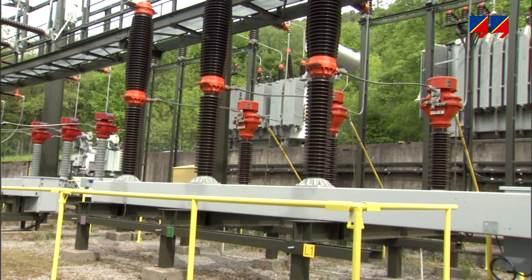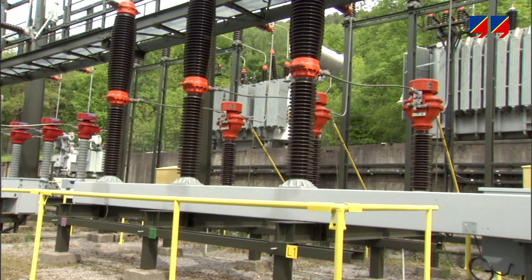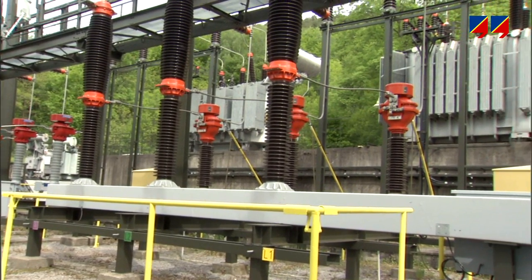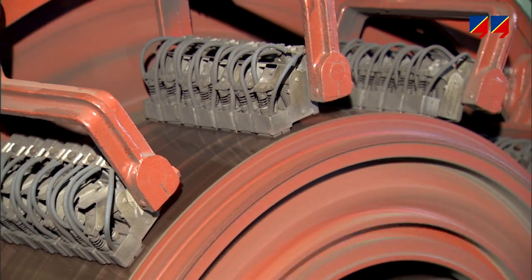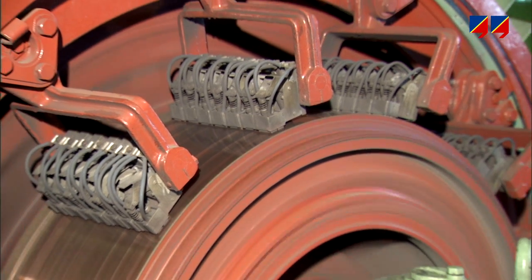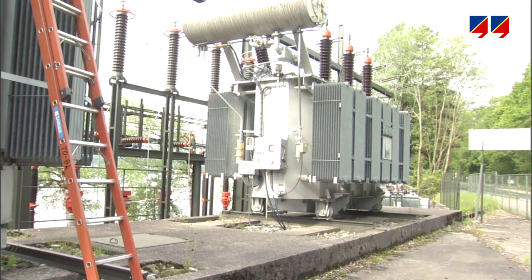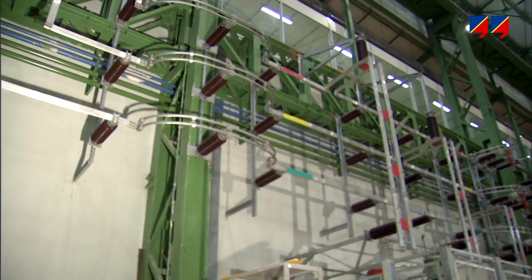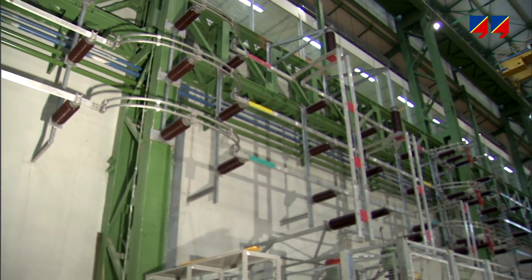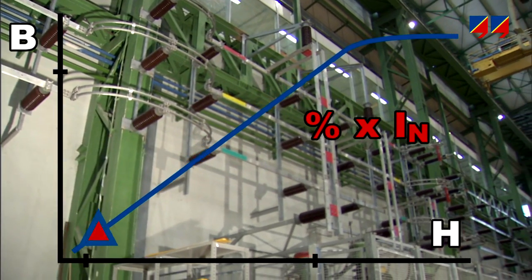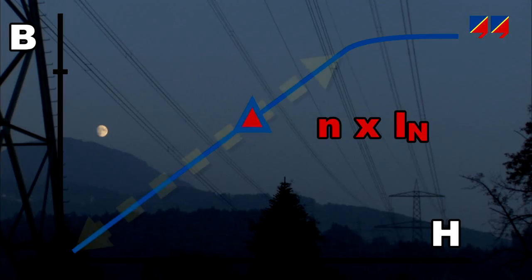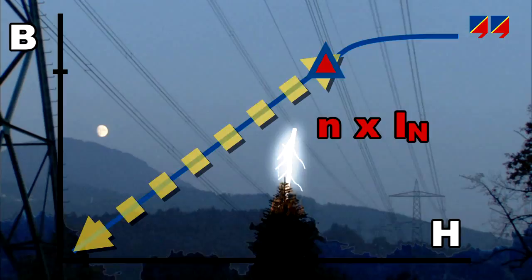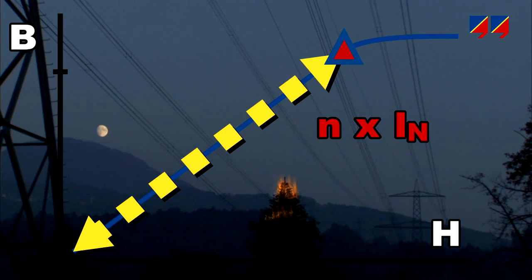Ensuring this is the task of protection CTs, which must be able to transform currents flowing in generators, transformers, or bus bars, ranging from a few percent of rated current up to many times its value for short circuit faults.